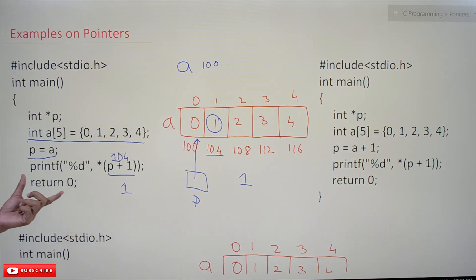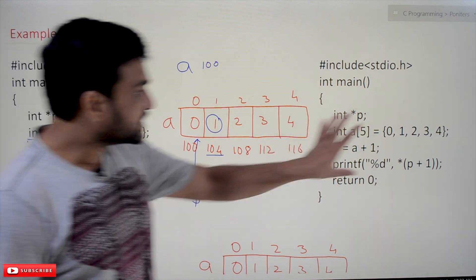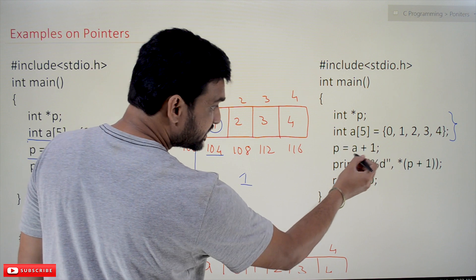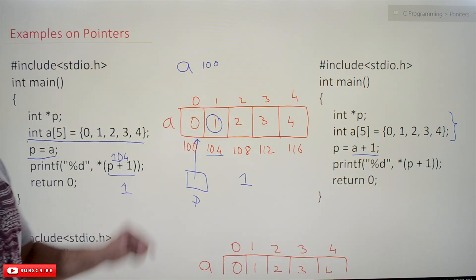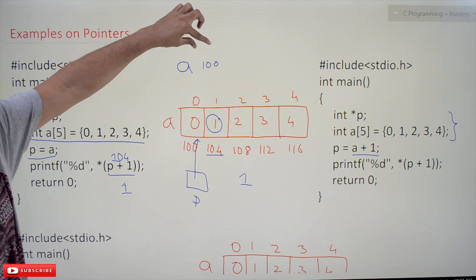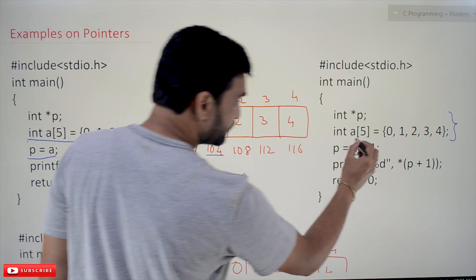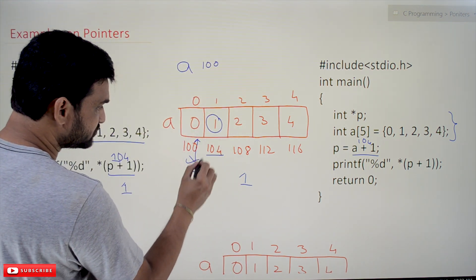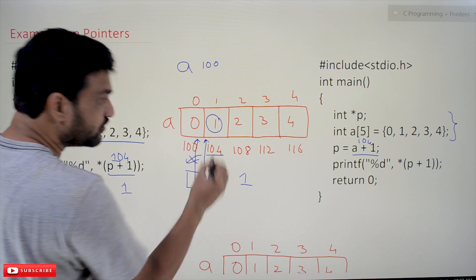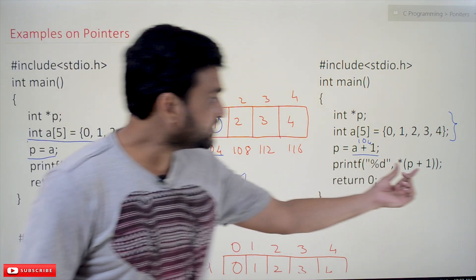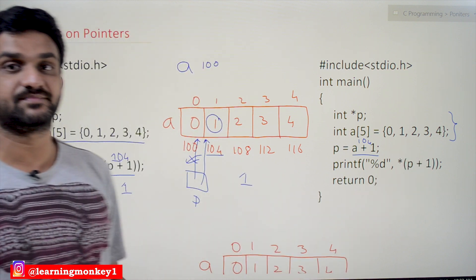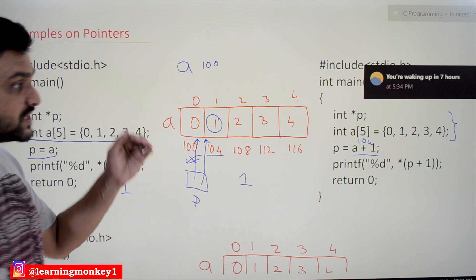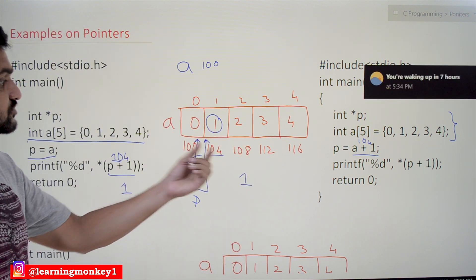Coming to the second example: same array, same pointer. Here P is assigned a+1. The value of a is 100, so a+1 means address 104. Now P is assigned to 104. Now we are trying to print *(P+1): P is pointing to 104, so P+1 means 104 plus 1, which gives us address 108.